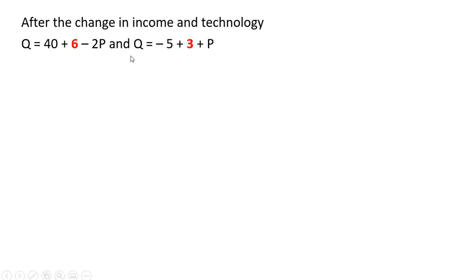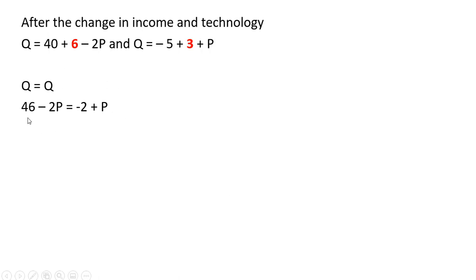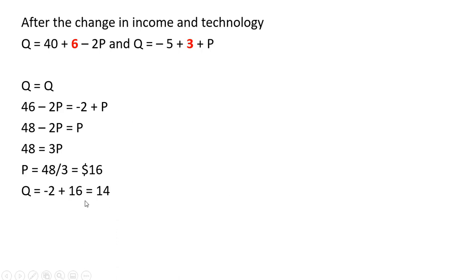After the change in income and technology, we change our demand equation by adding plus six — since consumers are willing to buy six more units at any given price. On the seller side, we add plus three to the supply equation since sellers are willing to sell three more units at any given price. Simplifying those equations and solving for the price, the equilibrium price is $16. Plugging $16 back into either the demand or supply equation, the equilibrium quantity is 14 units.